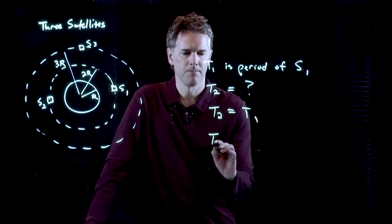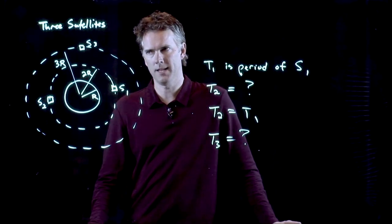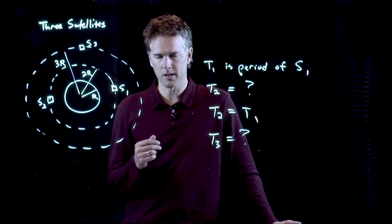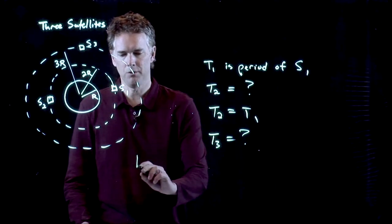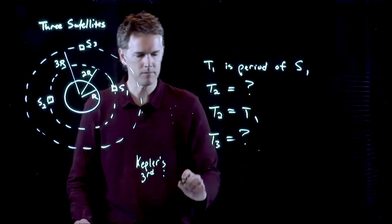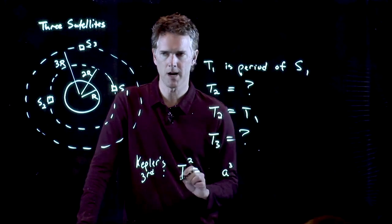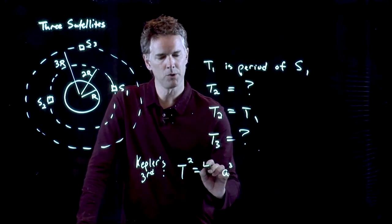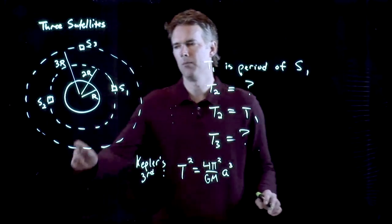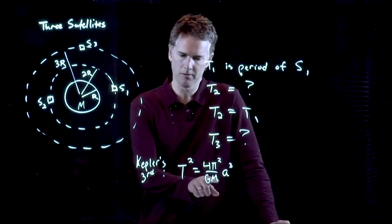But what about T3? How do we calculate T3? Well, to calculate T3 we need to go back to Kepler's laws and specifically Kepler's third law. And what Kepler's third law said was the following. The period squared is proportional to the semi-major axis cubed, where that proportionality constant is 4π² divided by GM, where capital M is the mass of the planet or star that you're orbiting. So in this case it would be the mass of the Earth.